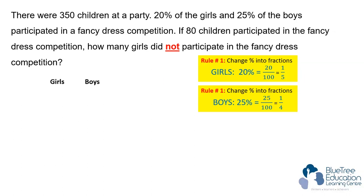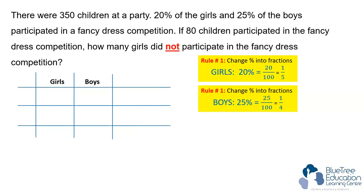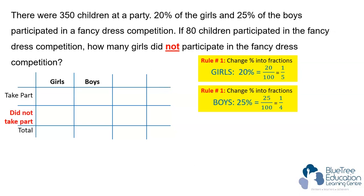There are girls and boys in the story, so we're going to draw our tic-tac-toe table and put the information into the table. Usually it is a start-change-end table, but in this story we don't need those headers. So we're going to change it to: take part, did not take part, and total.